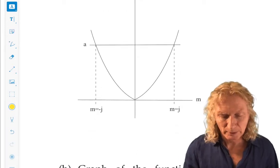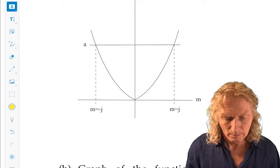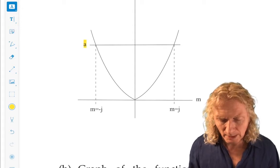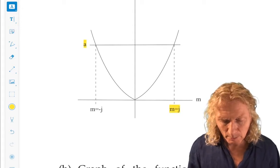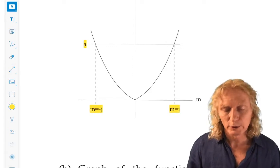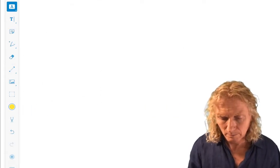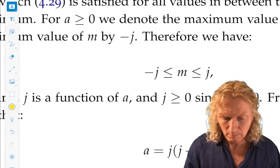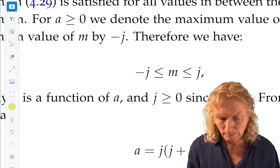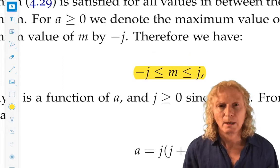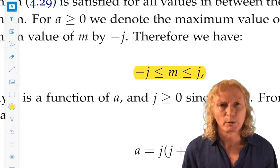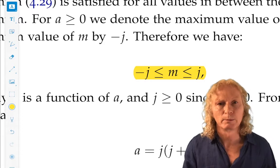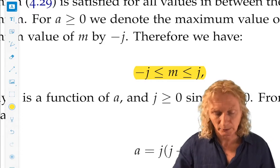For a fixed A, we can see that we have a maximum and a minimum value. We call those J and minus J. That's important. M has a maximum and minimum value, minus J to J. J is positive.